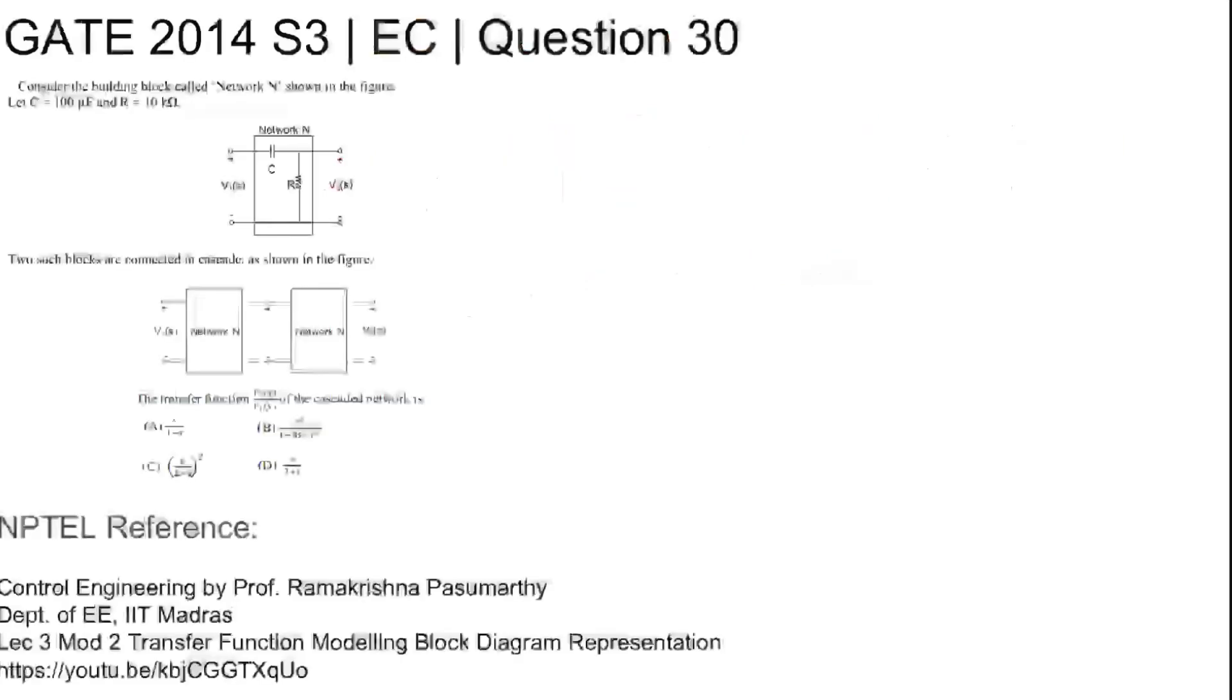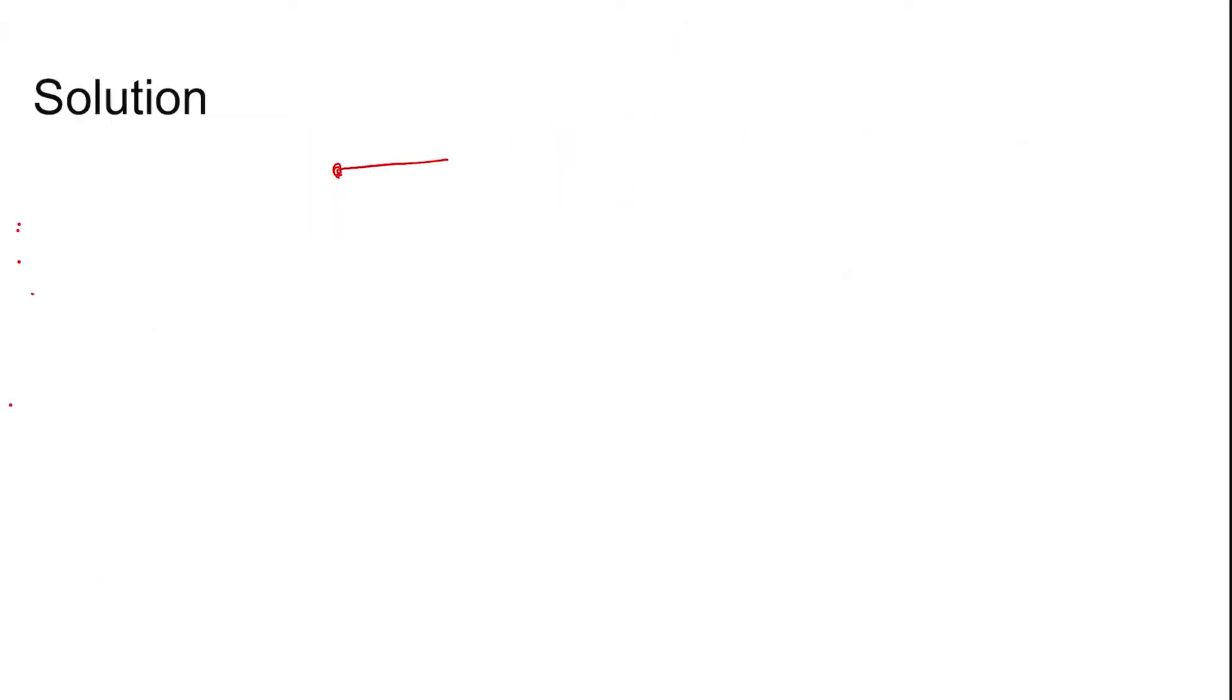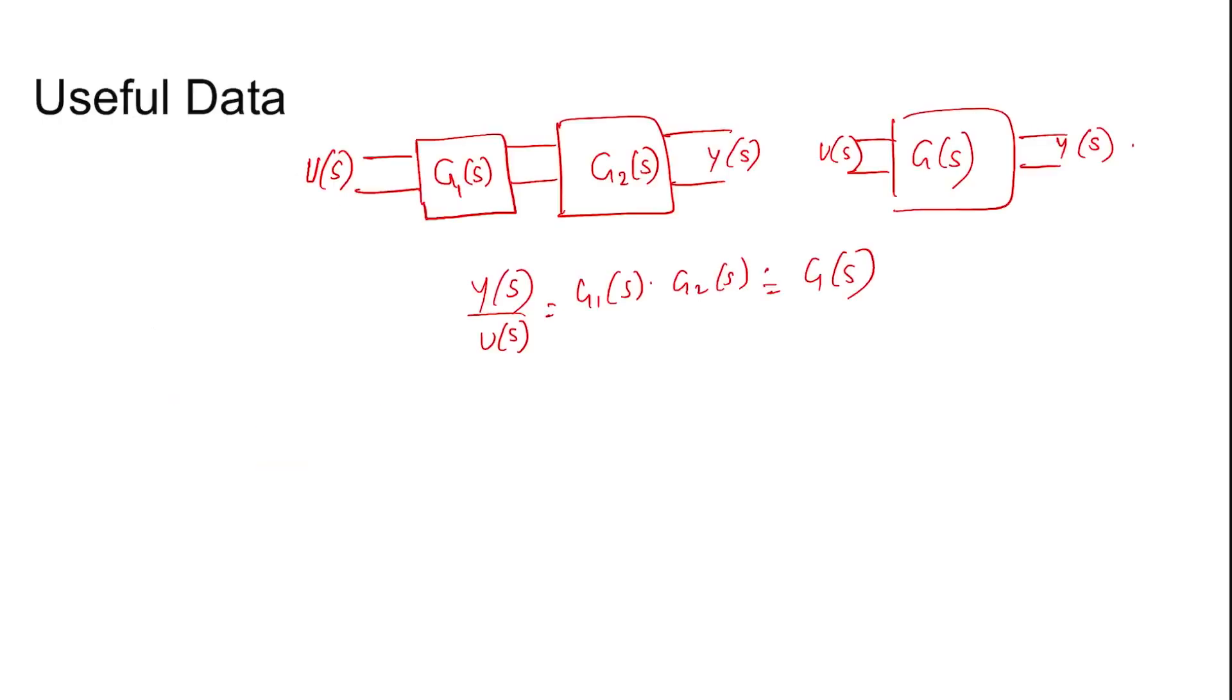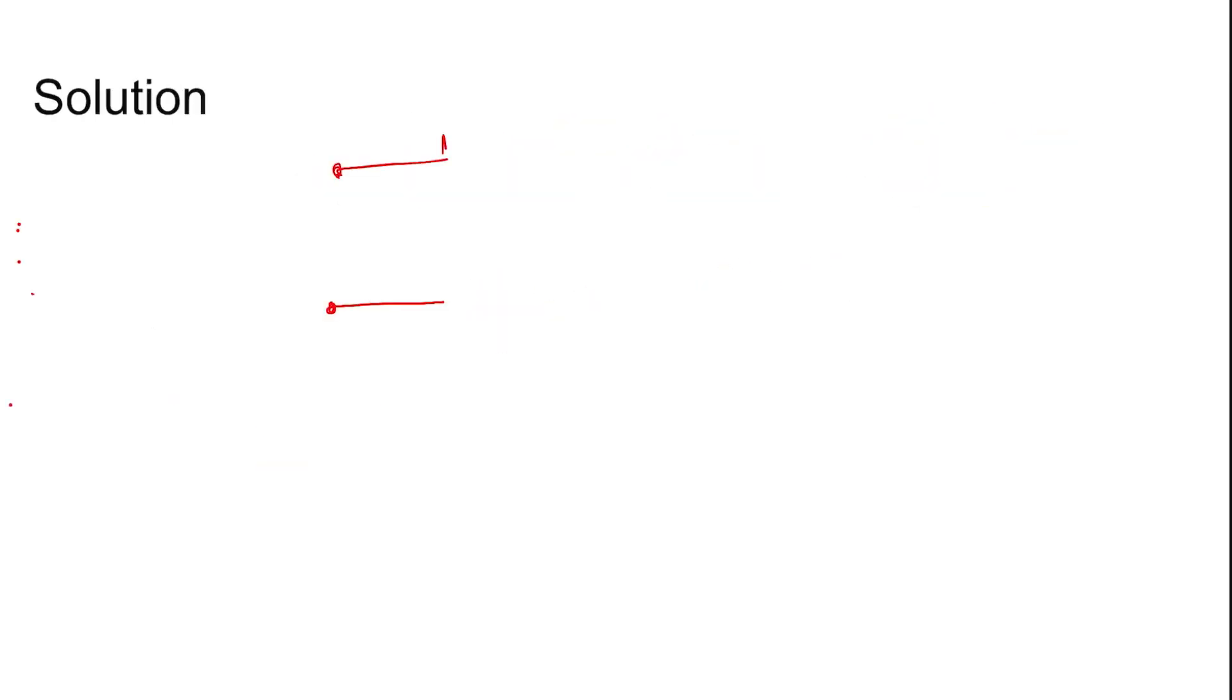Coming to the solution, the system here, the C is connected like this and then R. This is V1, this is V2. Transferring into Laplace domain, it becomes V1(s), and this becomes 1 by sC, this becomes R, and then this is V2(s).